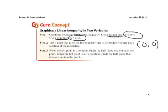Now step three, when the test point is a solution. If (0,0) makes that inequality true, we're going to shade towards the origin, point (0,0). But if it's not true, if it's not a solution, we're going to shade away from the point (0,0).